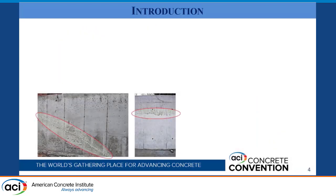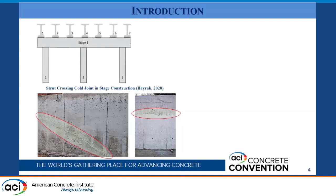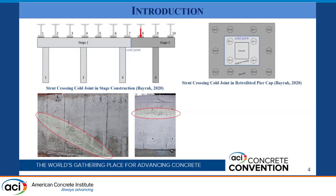You may ask: what is a cold joint? A cold joint is the interface between two layers of concrete that were cast at different times, as you can see here. They can happen intentionally, such as in scenarios where we retrofit or expand a structure, or they can happen unintentionally in scenarios where we have unexpected delays in the construction phase. In any case, these cold joints introduce a discontinuity in concrete that requires additional design approaches.